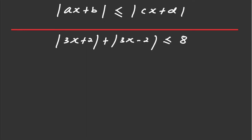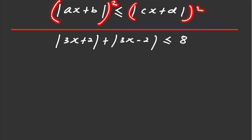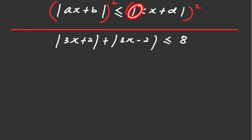In this video, I will show you two different methods for solving modulus inequality. The first method we can utilize is squaring both sides of the modulus inequality in order to get rid of the modulus or absolute value.